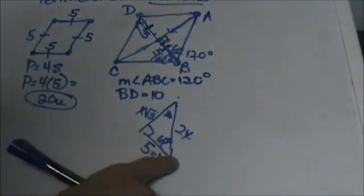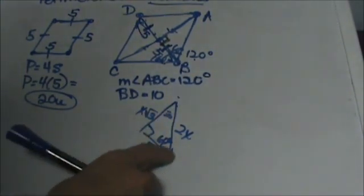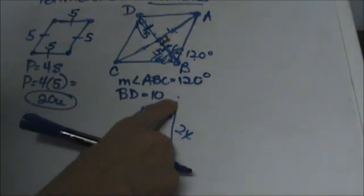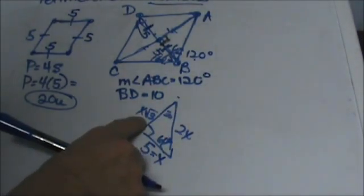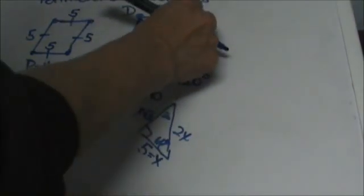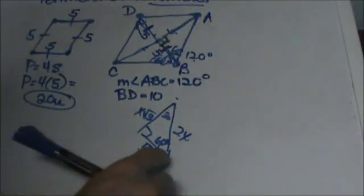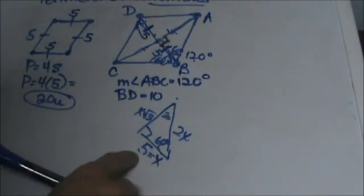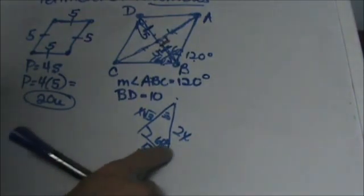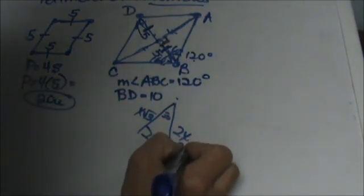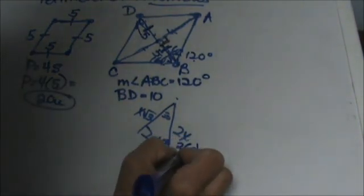So since I have the short or the smaller leg I'm going to call that x. If I needed this diagonal I could multiply 5 by the square root of 3. But I don't need it because I don't need to know the length of the diagonal. But I do need this hypotenuse. So all I need to do is take the 5 and multiply it by 2. So 2 times 5 is 10.